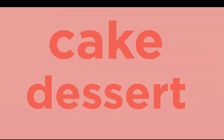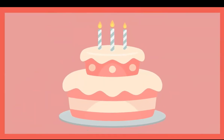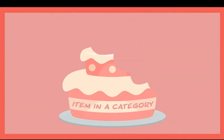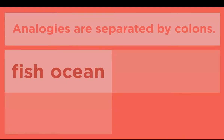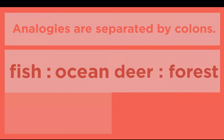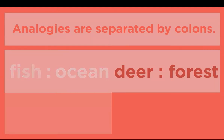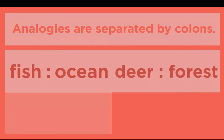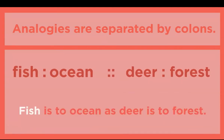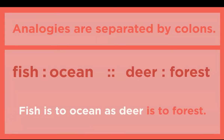Cake and dessert have an item-in-a-category relationship because cake is a type of dessert. Analogies can be written in word form, but they are usually separated by colons. For example, fish and ocean are compared, separated by a colon, and deer and forest are compared the same way. When one set of words is compared to another set, the two sets are separated by two colons. The proper way to read this analogy is: fish is to ocean as deer is to forest.